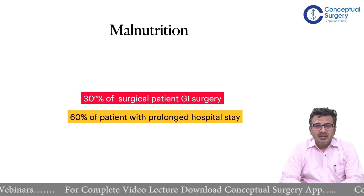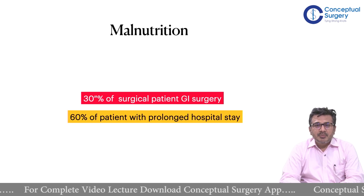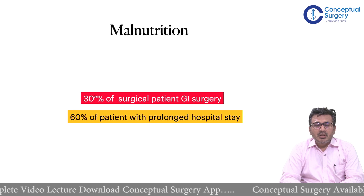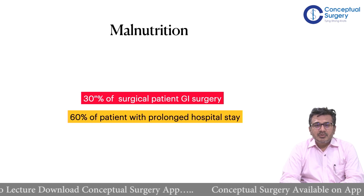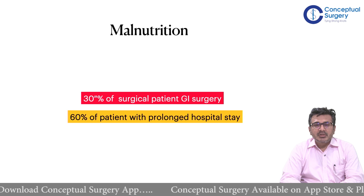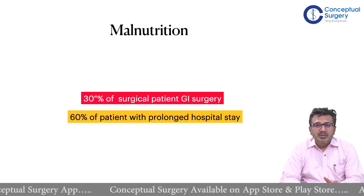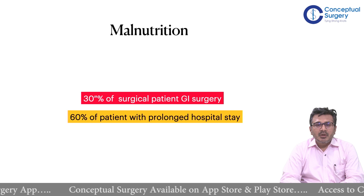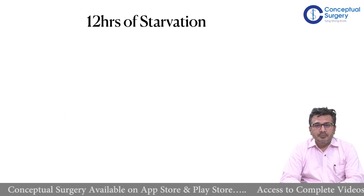Malnutrition leads to higher morbidity, mortality, and poor quality of life. Essentially, 30 percent of surgical patients who undergo GI surgery would require good nutrition, and 60 percent of patients with prolonged hospital stays would also undergo malnutrition. This is a major chunk of the population that will be affected if proper care is not taken.